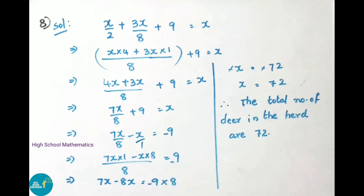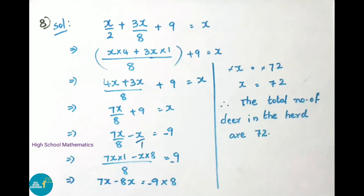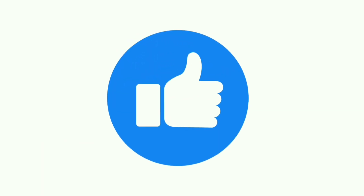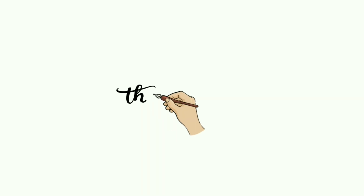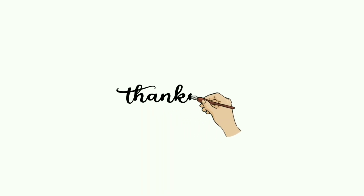Therefore the total number of deer in the herd is 72. Today we have seen exercise 2.4, sums 7 and 8. In our next video we shall see the remaining 2 sums of this exercise. Hope you all liked this video. If you like this video, please like, share it with your friends and subscribe to our channel. Thank you for watching.